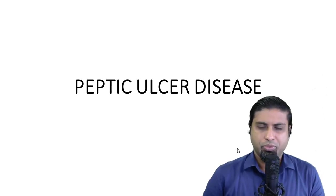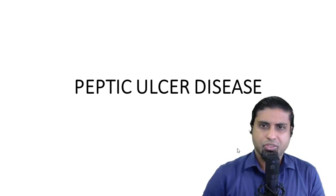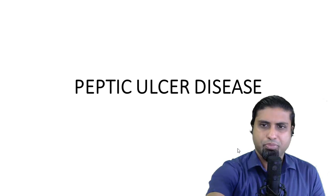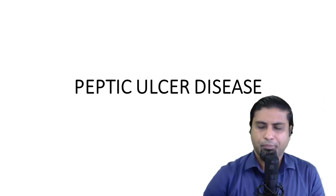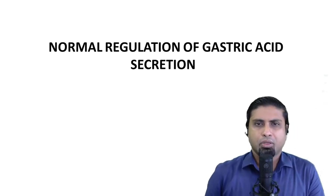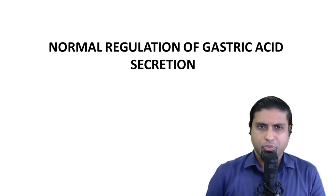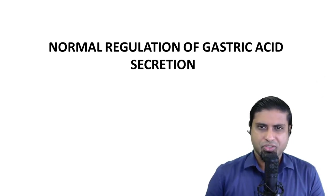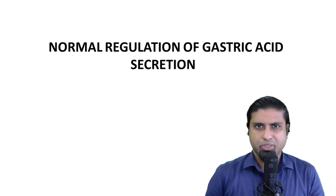In this video, we will discuss the drugs used in peptic ulcer disease. When we talk about the normal regulation of gastric acid secretion, the role of six types of cells needs to be clarified.